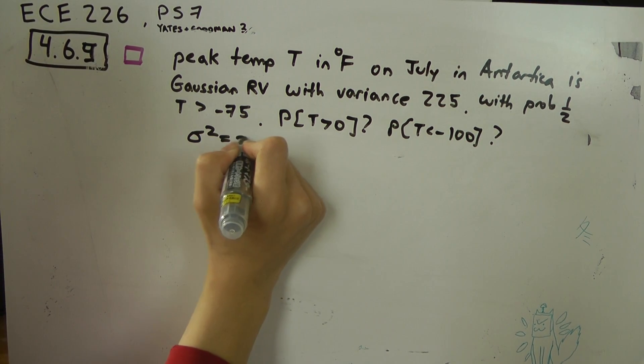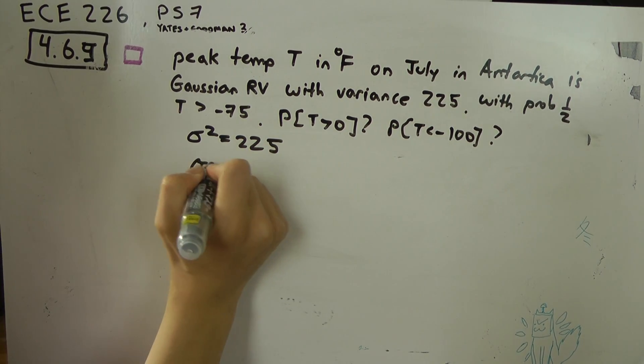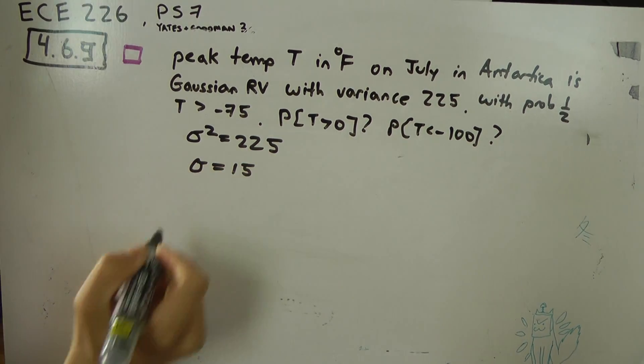So variance is 225. That's a square number. The standard deviation is 15.